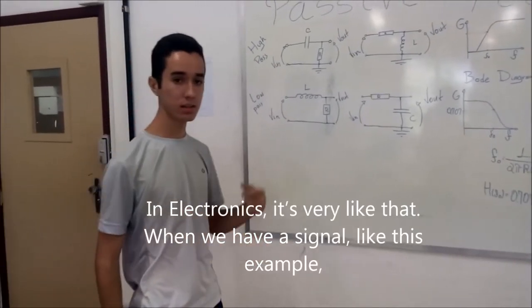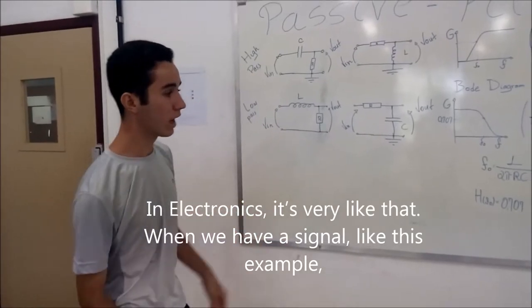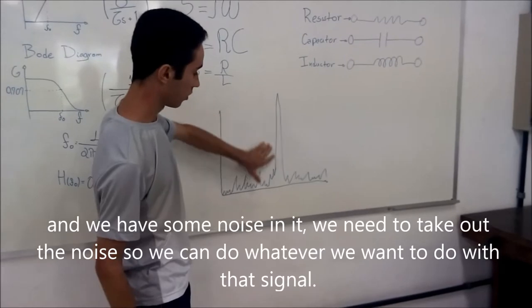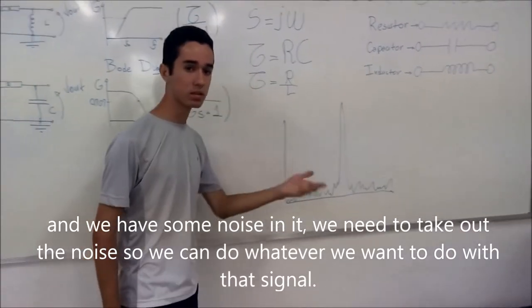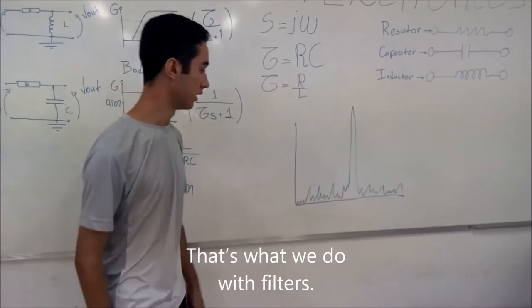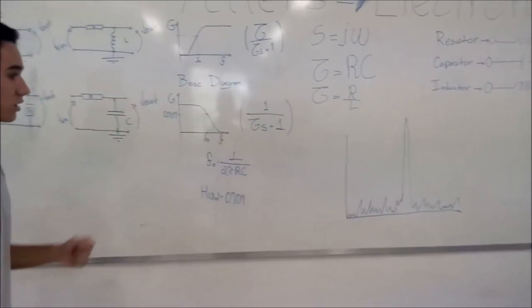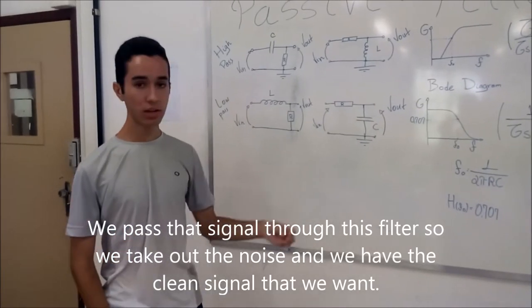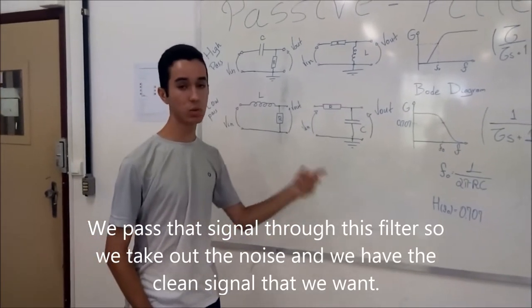In electronics, it's very like that. When we have a signal, like this example, and we have some noise in it, we need to take out that noise so we can do whatever we want to do with that signal. That's what we do with filters. We pass that signal to this filter, so it takes out the noise and we have the clean signal that we want.